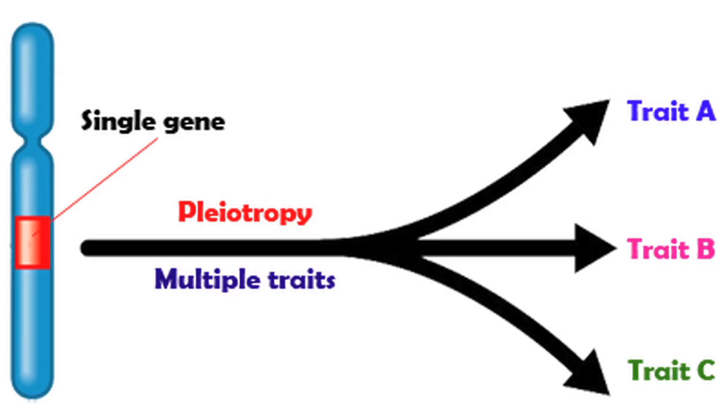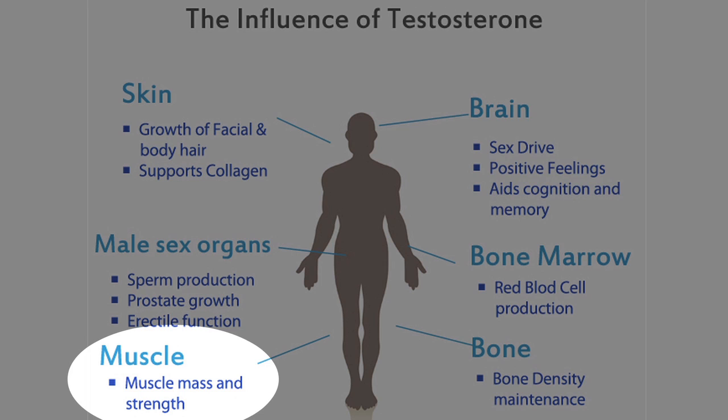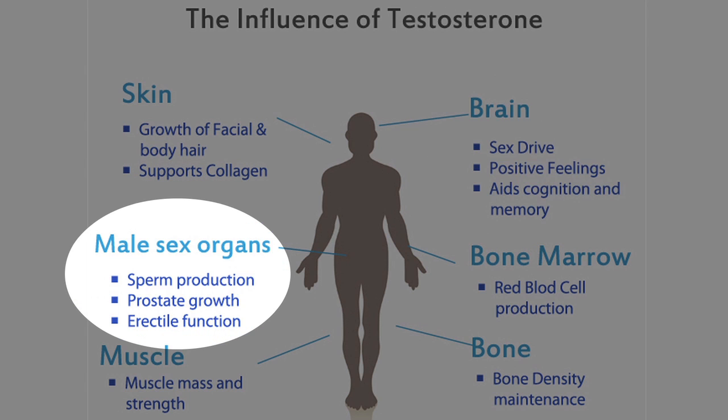This phenomenon is called antagonistic pleiotropy. Pleiotropy is when a gene controls for more than one trait, and the antagonistic part refers to how the expression of these two traits conflict with one another. One of the best examples of this is testosterone in men. Testosterone makes men stronger, more confident, and more fertile in their prime, but also leads to an increased risk of prostate cancer later in life.